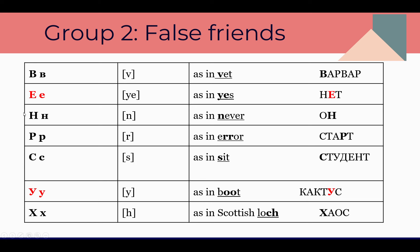This letter that looks like H is actually Н — sound 'N,' as in 'never.' We can read: Он — He. And this is Р — not the soft English R, but a rolled R like a lion or tiger, as in the word 'error' but with Russian pronunciation.